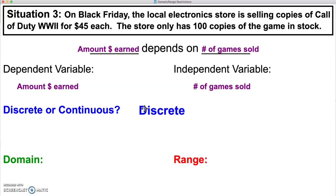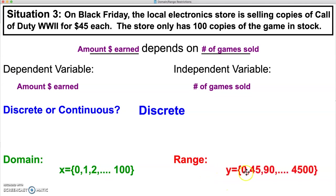Our domain values are going to start at 0 because we could sell 0 games, 1 game, 2 games, all the way up to the store's stock of 100 games. Our range value depends on our domain because our range, or our Y values, are our dependent variable. So the amount of money earned: we could earn $0; with the first game sold it's $45; the second game sold is $90, so on and so forth until we sell all 100 games for $45 apiece, earning $4,500 for the store.